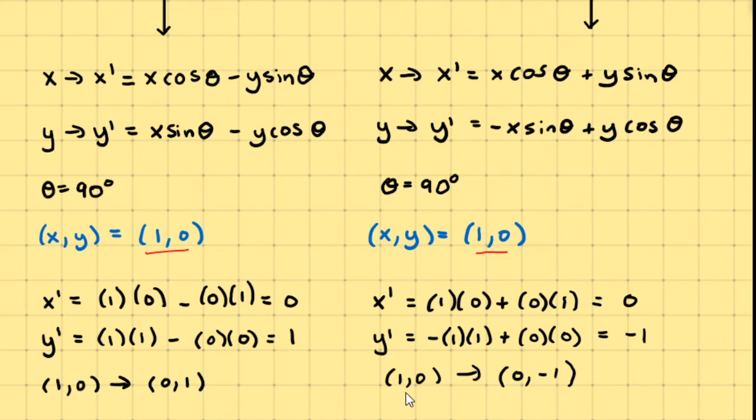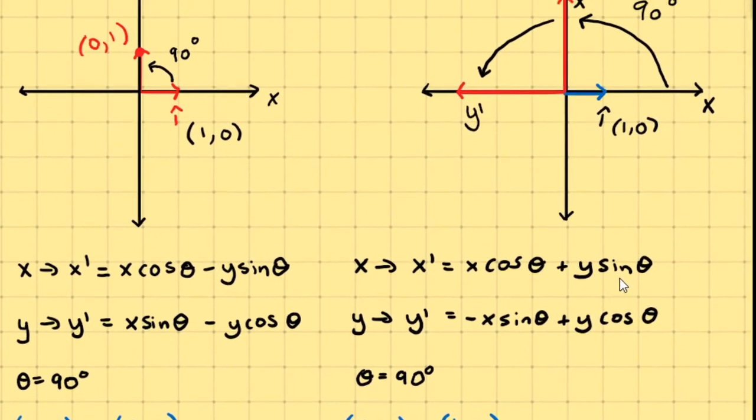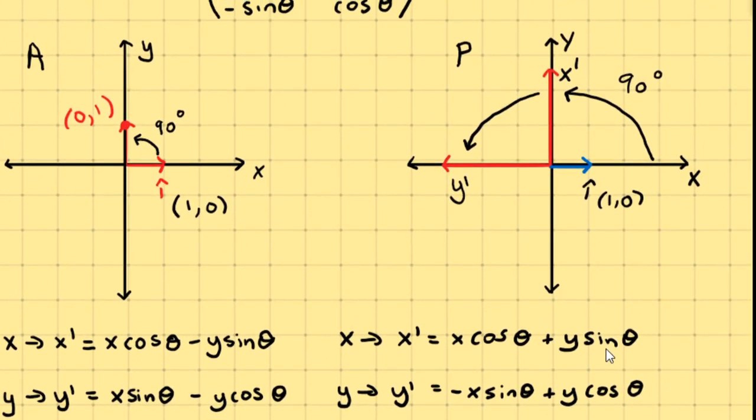you find that the point 1, 0 transforms under a passive transformation to the point 0, minus 1. 0, minus 1. So if you come up, and look at our diagram, this vector i hat has not changed,